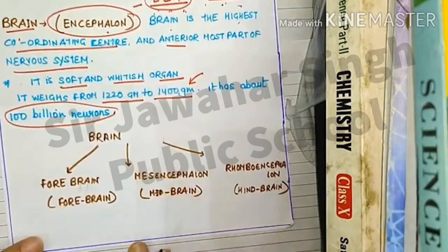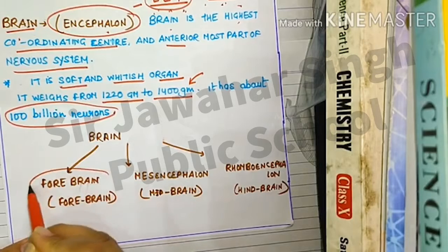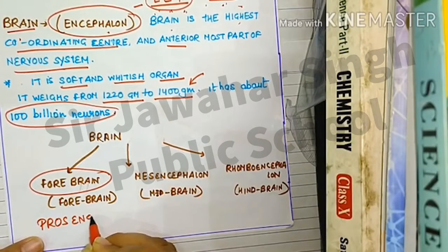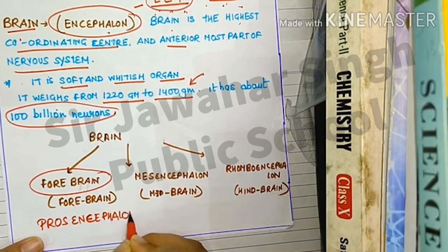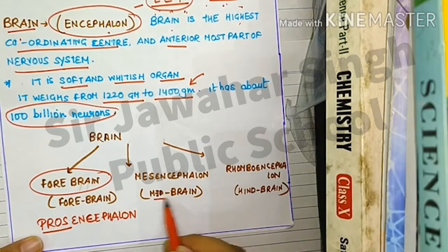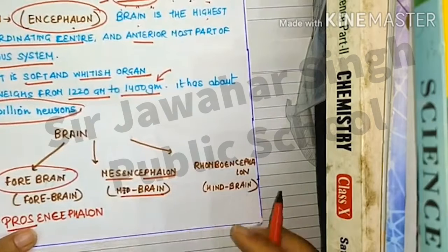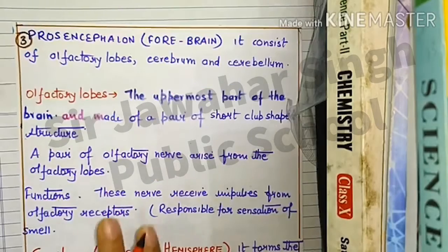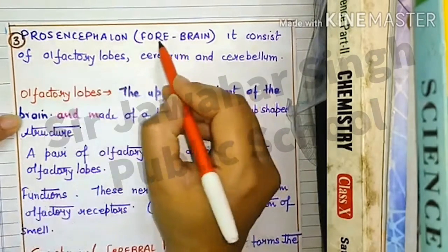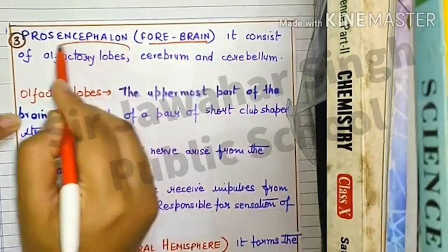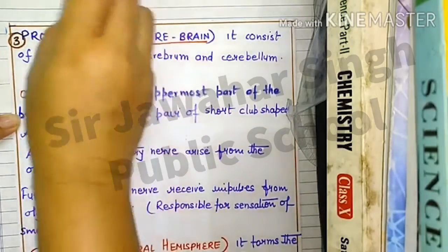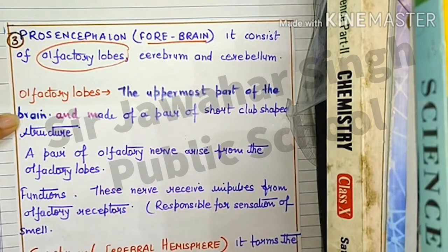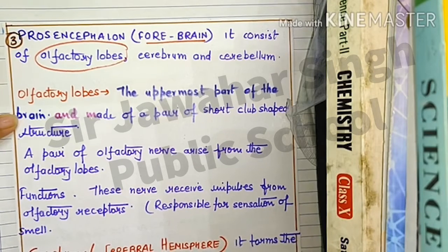The brain is divided into three parts: the forebrain, also known as prosencephalon; the midbrain, also known as mesencephalon; and the hindbrain, also known as rhombencephalon. The forebrain, or prosencephalon, consists of olfactory lobes, which are present in the nose and are responsible for the sensing of smell.